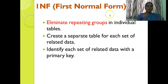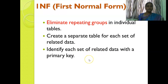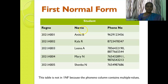The rules of first normal form are: eliminate repeating groups in individual tables, create a separate table for each set of related data, and identify each set of related data with a primary key. In first normal form, we have to eliminate the repeating group, which means a cell should not have multiple values in a table.